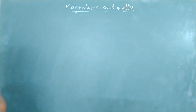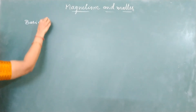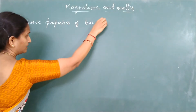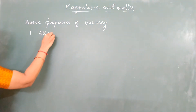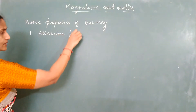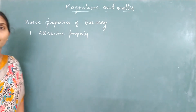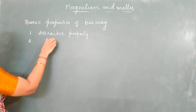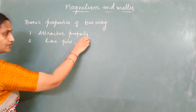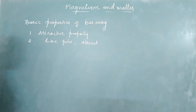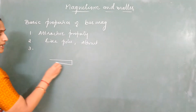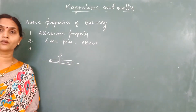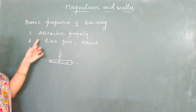All of you are familiar with a bar magnet. What are the basic properties of a bar magnet? We know a bar magnet has attractive properties — it has the ability to attract ferromagnetic materials such as iron. The second property is that like poles always repel and unlike poles attract. Third is the directional property: a freely suspended bar magnet always aligns pointing toward the geographic north and south, which is actually the magnetic north and south.